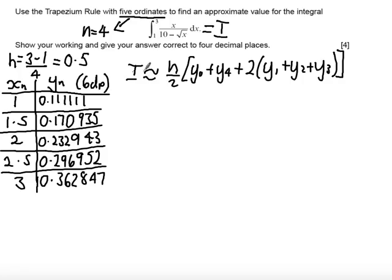So I is approximated by h, which is 0.5 over 2, multiplied by our first y value, which is 0.111111, plus our final y value, which is 0.362847.